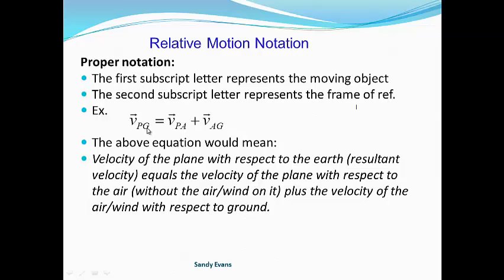So the above equation here would mean the velocity of the plane with respect to the earth, or I'm calling it ground, equals the velocity of the plane with respect to the air—and that's the velocity without the wind pushing on it—plus the velocity of the air with respect to ground. And that's going to give me my resulting velocity of the plane with respect to the ground.